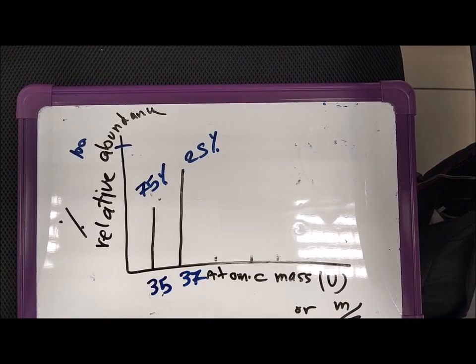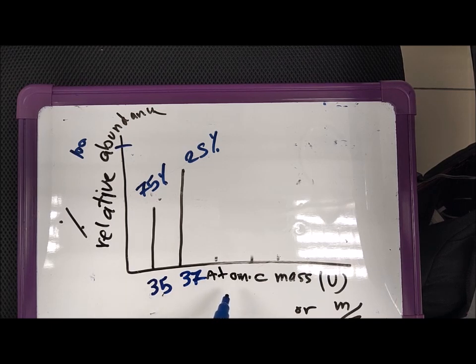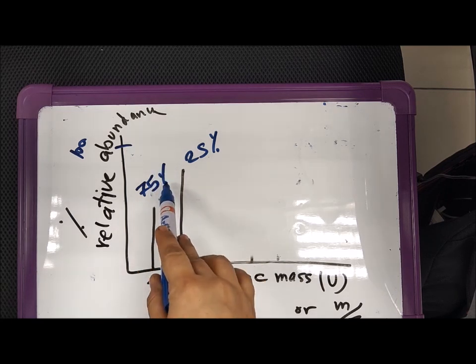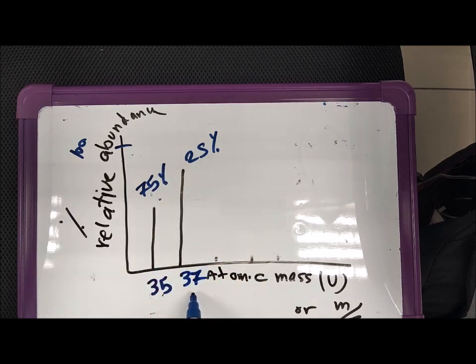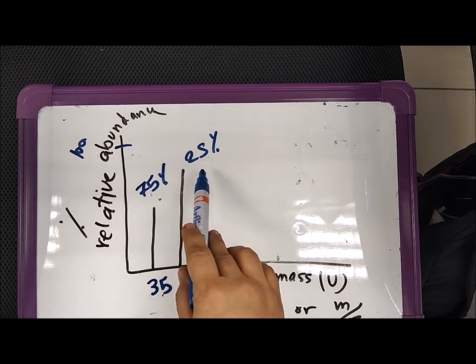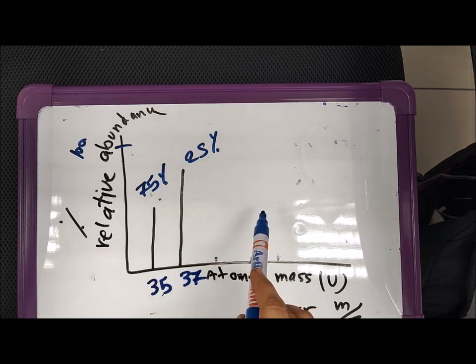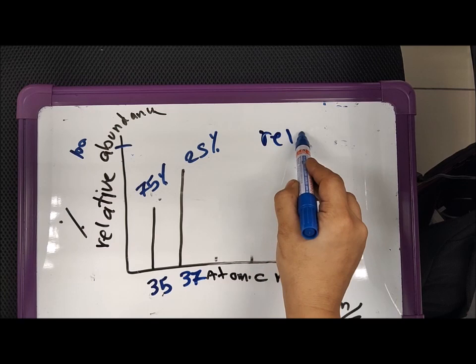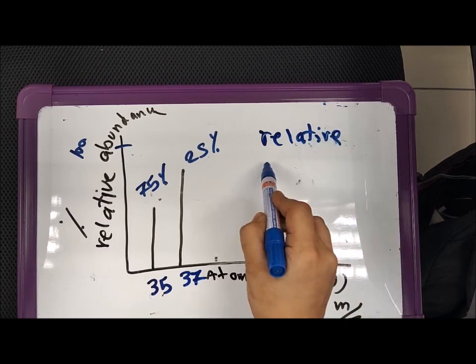For example, chlorine has two isotopes, with Cl-35 with the abundance of 75%, and the other one is chlorine which is 37, atomic mass 37, and 25% abundance. We have to calculate the relative atomic mass.